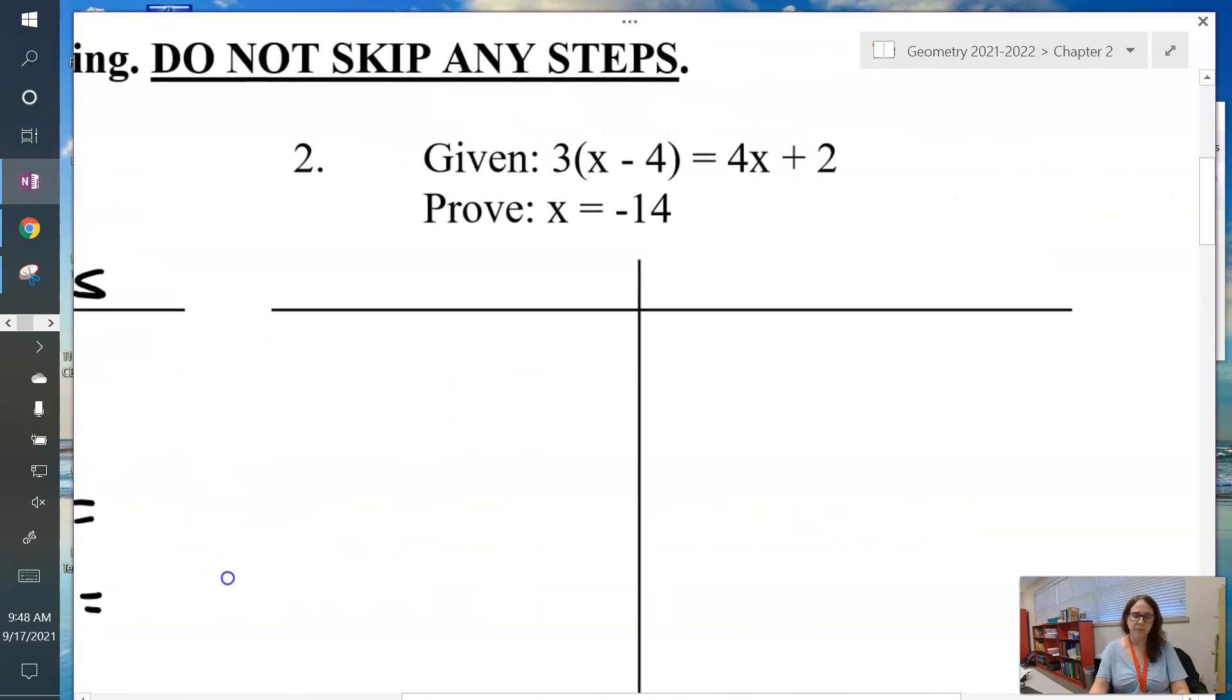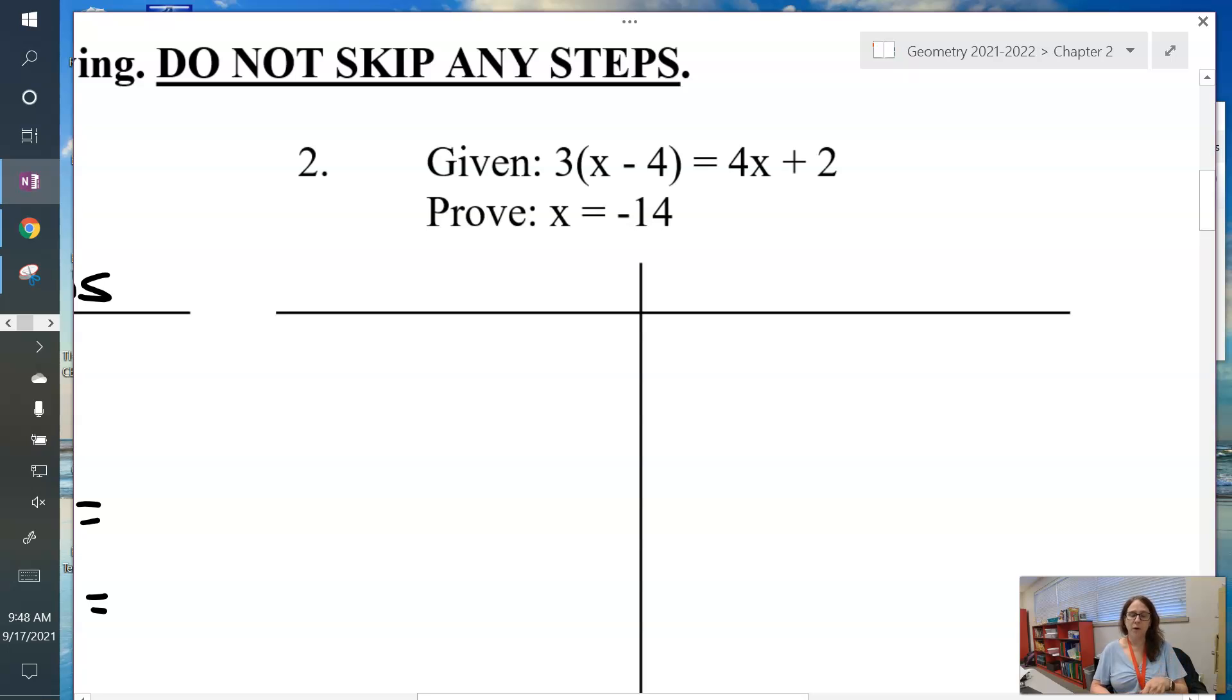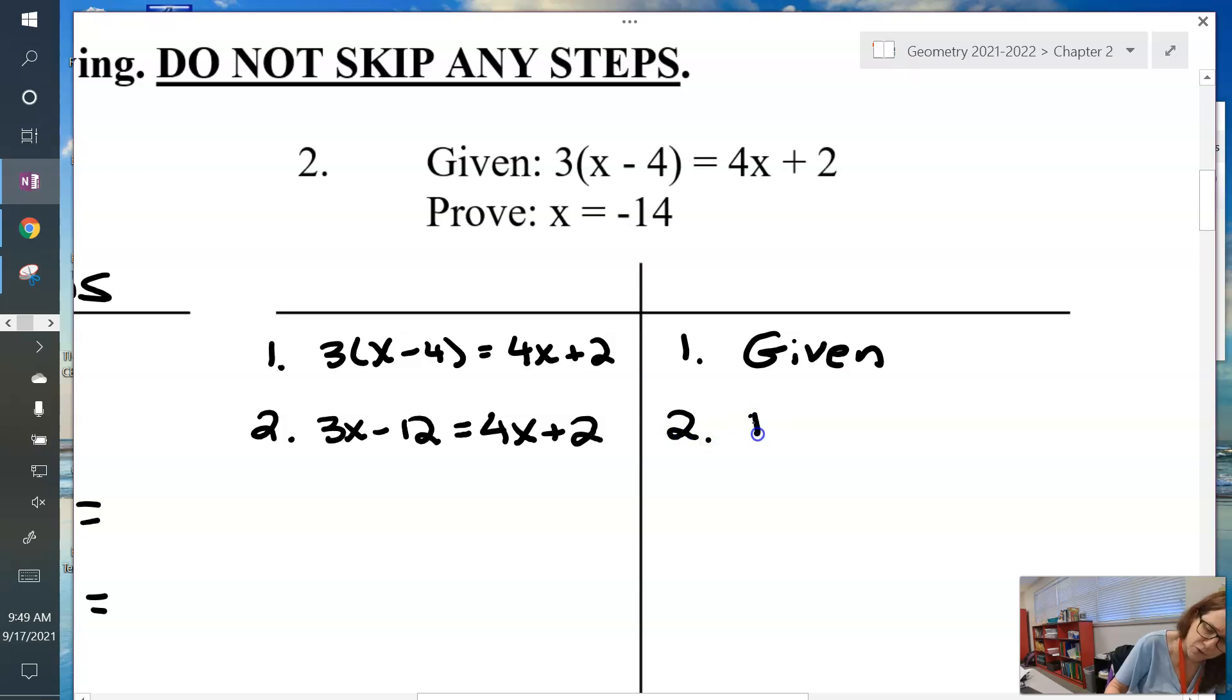Let's do the next one. We're given 3 times the quantity x minus 4 equals 4x plus 2, and we're to prove that x equals negative 14. So first thing, 3 times x minus 4 equals 4x plus 2. That's the given. Always start with given. On quizzes and homework, you do get points for that. Next thing I'm going to do, just like I would if I was in Algebra 1, is I would distribute that 3 through.